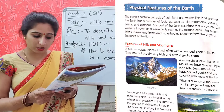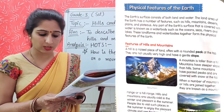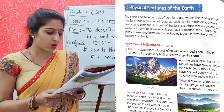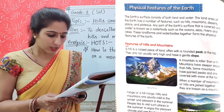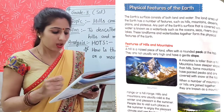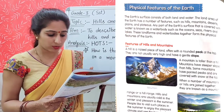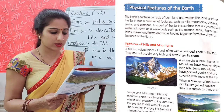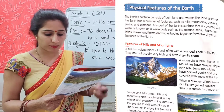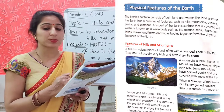Hills are not usually very high and have a gentle slope. A mountain is taller than a hill; mountains have steeper slopes than hills and some have pointed peaks covered with snow at the top. When a number of mountains or hills are joined together they are known as a mountain range or hill range. You can see the pointed top and steeper slopes in this picture.